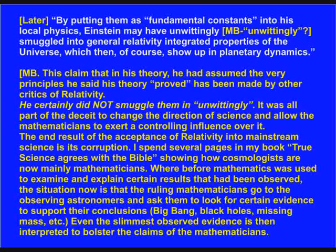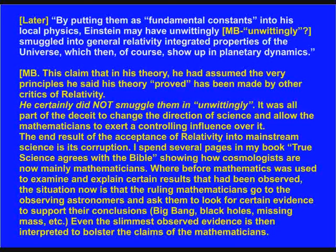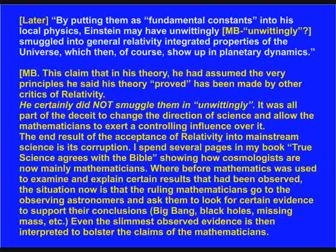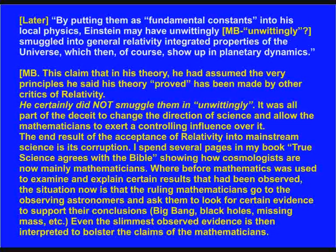The end result of the acceptance of relativity into mainstream science is its corruption. I spend several pages in my book, 'True Science Agrees with the Bible,' showing how cosmologists are now mainly mathematicians. Where before, mathematics was used to examine and explain certain results that had been observed, the situation now is that the ruling mathematicians go to the observing astronomers and ask them to look for certain evidence to support their conclusions — i.e., Big Bang, black holes, missing mass, etc. Even the slimmest observed evidence is then interpreted to bolster the claims of the mathematicians.